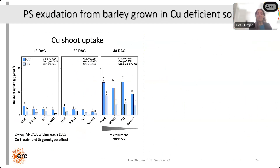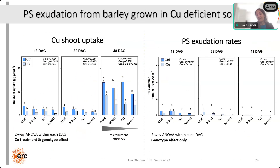Now the same story for the same plants growing under copper-deficient soil. We already see at an earlier growth stage a genotype and treatment effect, but overall this effect is less strong compared to our zinc-deficient soil. However, interestingly, when we look at the phytosiderophore exudation rates — keeping the scale the same and comparable — we hardly see any phytosiderophore exudation. We find a genotype effect, that is true, but we do not see a treatment effect. Even at 32 days we could say there's a genotype-treatment effect, but statistics says it's not significant. Overall, phytosiderophore exudation doesn't appear to play a major role under these conditions in this specific soil.